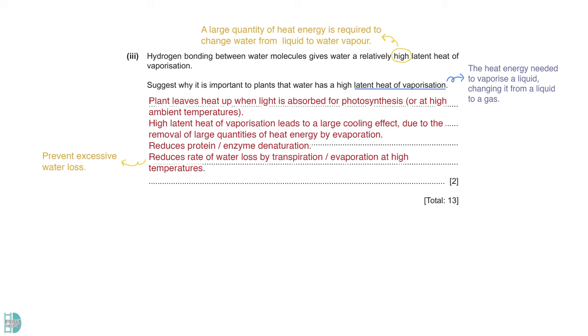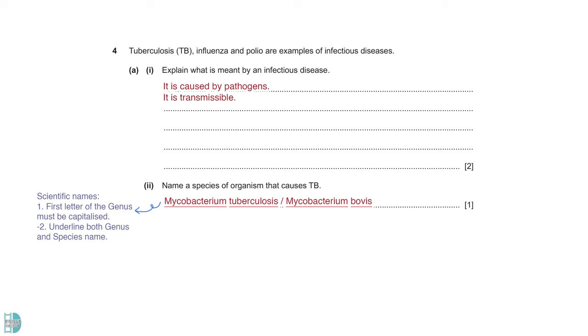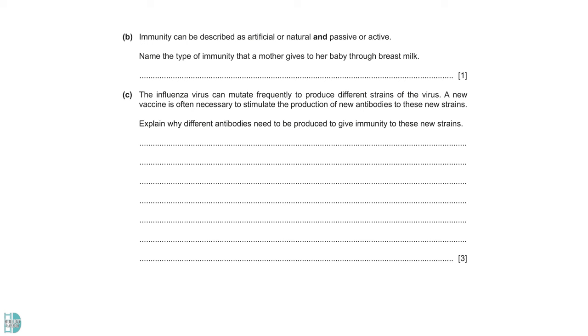Question 4 is about infectious diseases. Explain what is meant by an infectious disease. All infectious diseases are caused by pathogens such as viruses and bacteria. They are transmissible. Two organisms can cause TB. They are Mycobacterium tuberculosis and Mycobacterium bovis. Remember that the first letter of the genus must be in capital form, and the name has to be underlined.